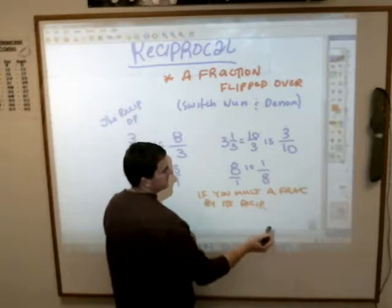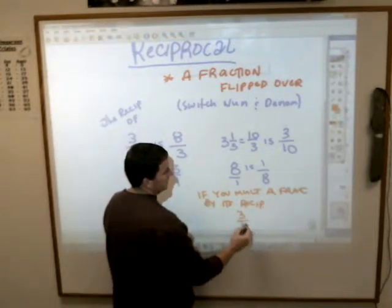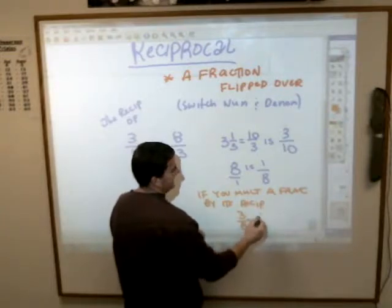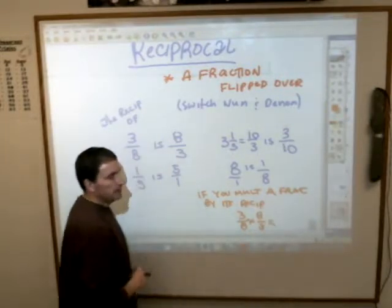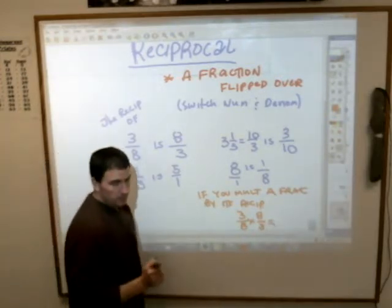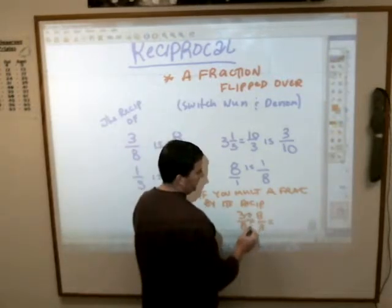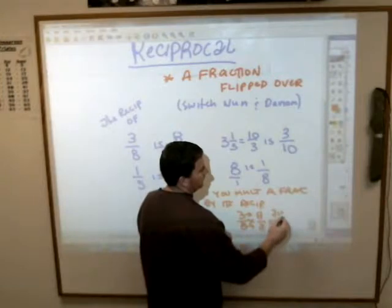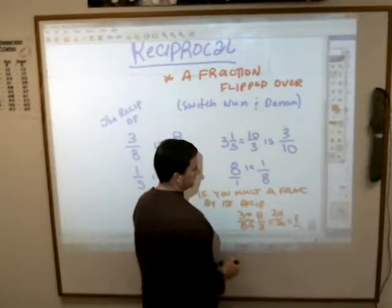For example, let's say I've got, well let's do the one we did up there. If you take 3 8ths and multiply it by 8 3rds, guess what you'll get? Actually, no. Calvin? 1? You do, because you multiply it across here, you get 24 over 24, and that is 1.